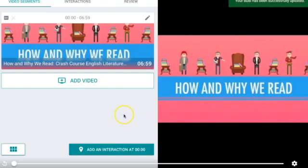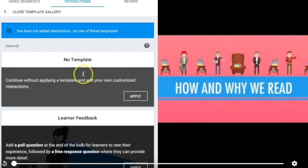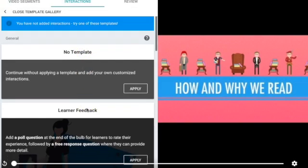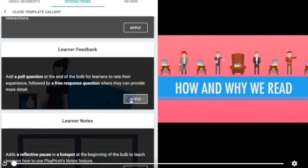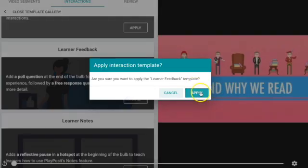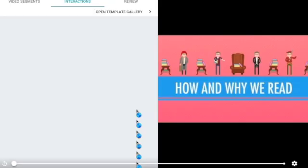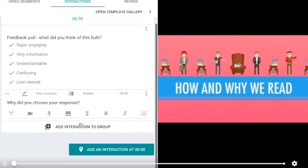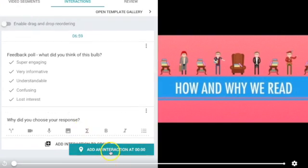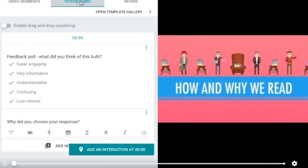Now's the good part, inserting the videos. So you can go to interactions up here at the top and there are a bunch of templates. So this is a great place to get started. Learner feedback is one I always like to do because at the end it'll ask your students just generally what they thought of the video. So you can see it's just going to be a poll. It doesn't have a grade associated and it has a short answer without points associated with it. I'm going to go back to interactions and it put it exactly at the end. And then I'm going to open the template gallery again.